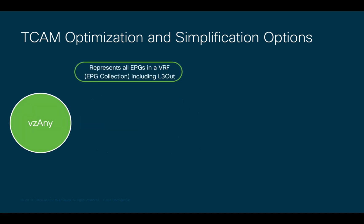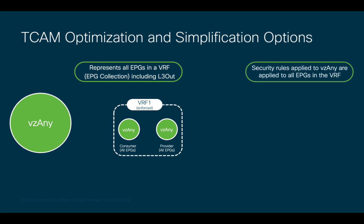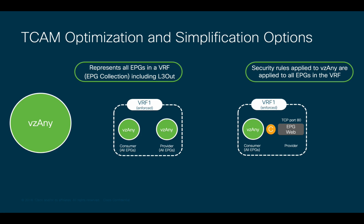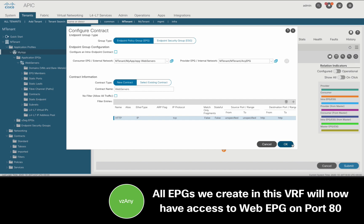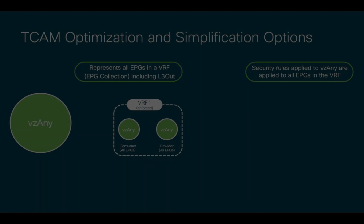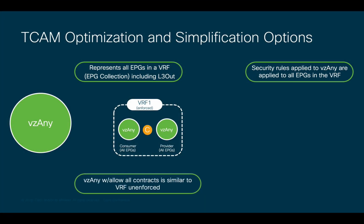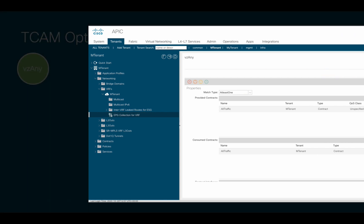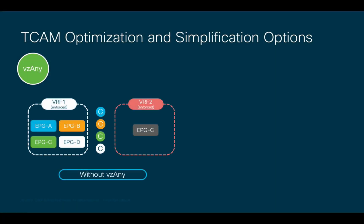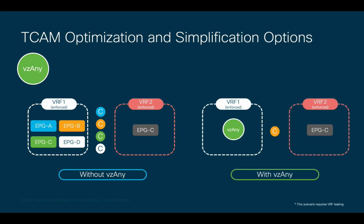VCNE represents all EPGs in a VRF, including its L3outs, and it can be used as consumer, provider, or both. If you want to communicate all the EPGs in a VRF to a specific EPG containing the web servers on port 80, just drag the 'any' icon on your application profile, and then create a contract between the VCNE collection and the provider EPG. All EPGs will now have communication to the web EPG on port 80. VCNE is useful since you do not need to create contracts for every EPG pair, which optimizes TCAM utilization. Keep in mind that VCNE can also be used across VRFs with the corresponding VRF leaking configuration.